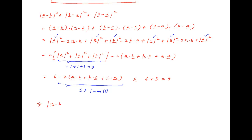Therefore, to summarize: |a−b|² + |b−c|² + |c−a|² ≤ 9.